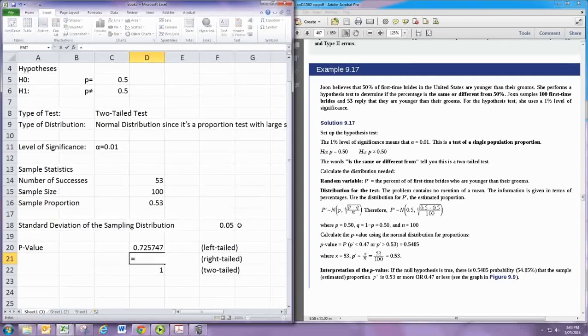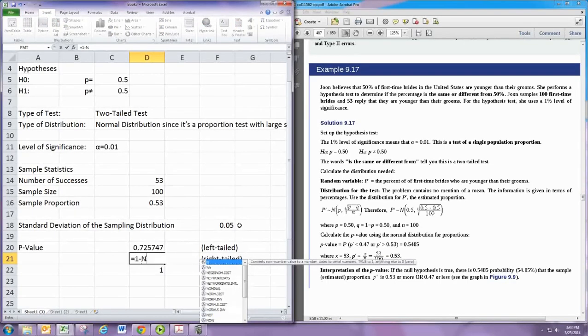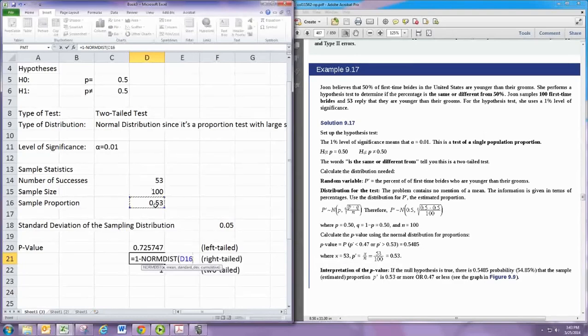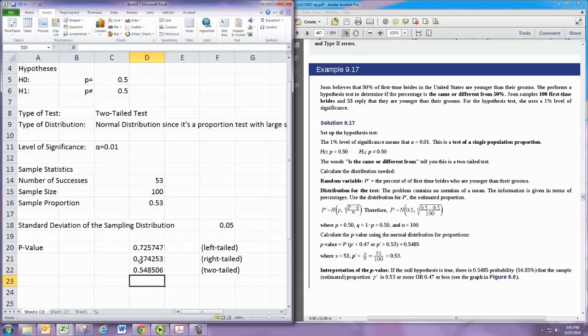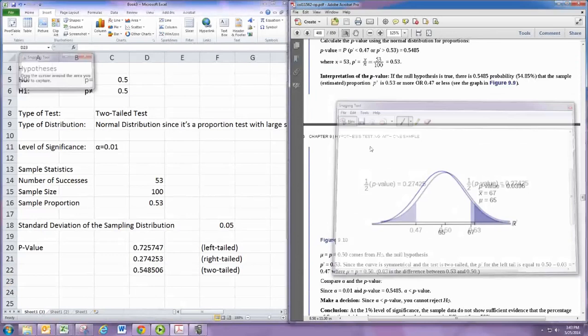Now for the right-tailed case, we would use 1 minus normdist, and put in all the same stuff: sample proportion, population proportion, standard deviation, and 1. And then the two-tailed case would be 2 times the minimum of these. And this is a two-tailed test, so that's actually the one we're going to want, and it's that 0.5485 right there, which does agree with the book.